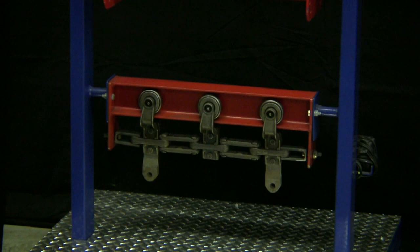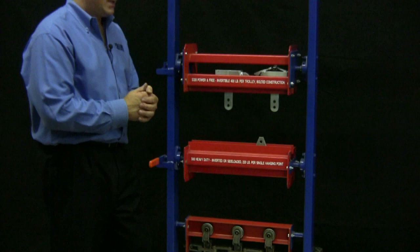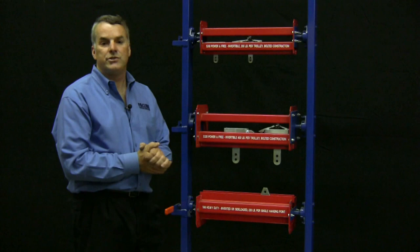The 4-inch has a capacity of 400 pounds per hanging point. And the 6-inch has a capacity of 1,200 pounds per hanging point. The 6-inch is what you would typically see in a car plant carrying an entire car.